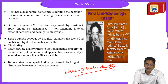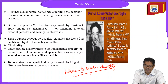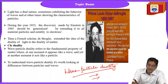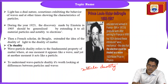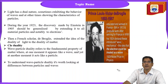Wave-particle duality means that light has a dual nature — sometimes exhibiting the behavior of waves, and sometimes behaving as particles. This dual nature of radiation was proposed by Louis de Broglie.